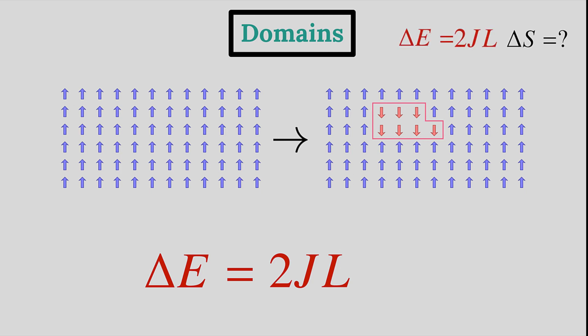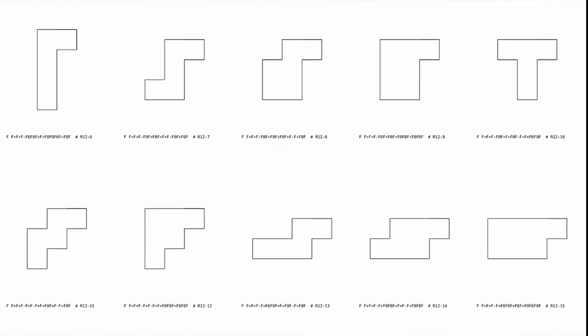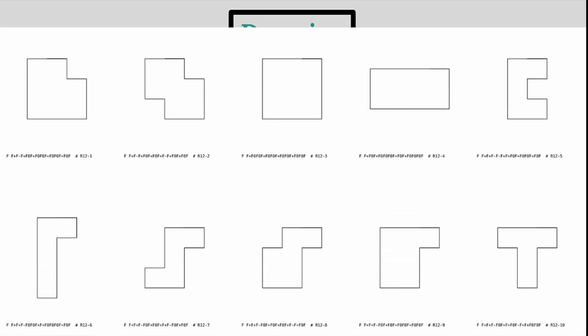But there are many ways to draw a domain of perimeter L in the lattice, not just one. We could place it anywhere, or even change its shape. As long as we preserve the perimeter, it has the same effect energetically.